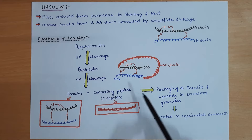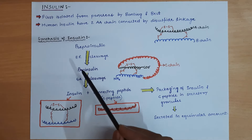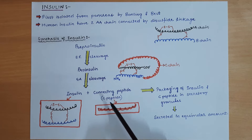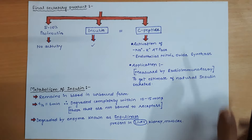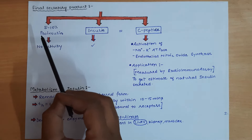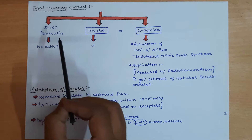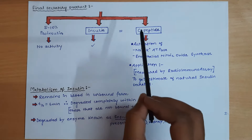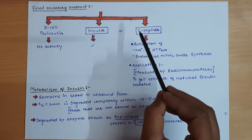Ultimately, two products are formed: insulin (the A and B chains with disulfide linkages) and C-peptide (the modified form of the C chain). These are packed into secretory granules and secreted in equimolar concentrations — meaning the amount of insulin secreted equals the amount of C-peptide secreted, since both are derived from pro-insulin.